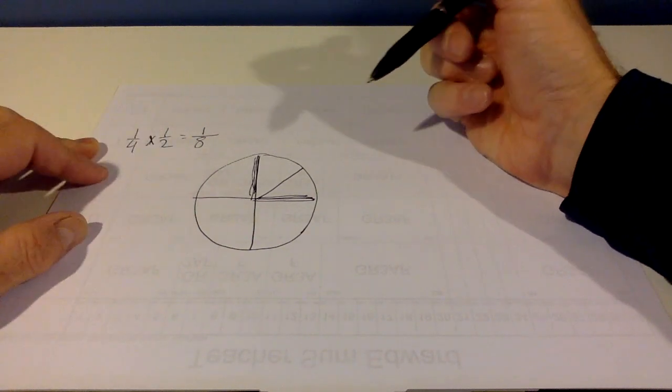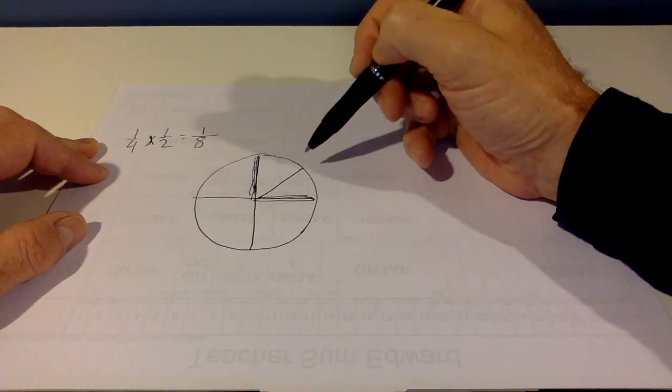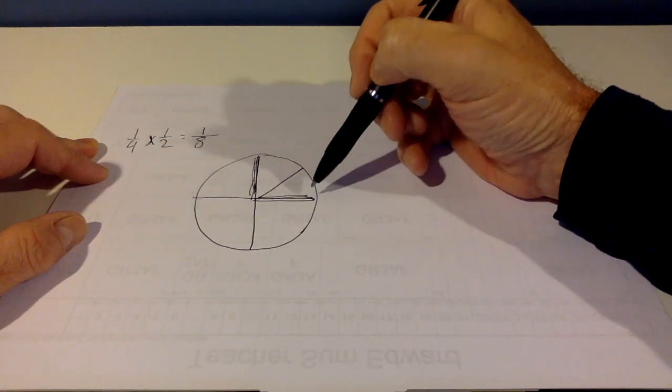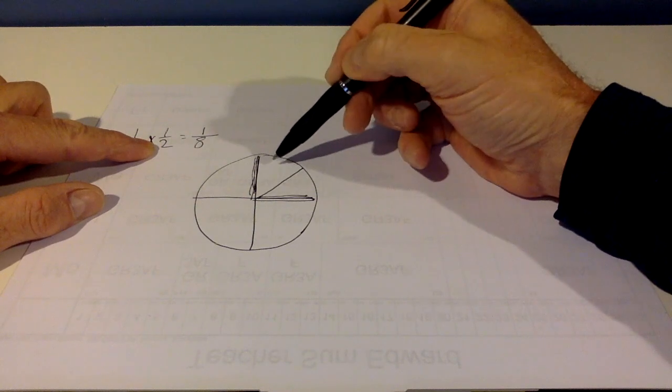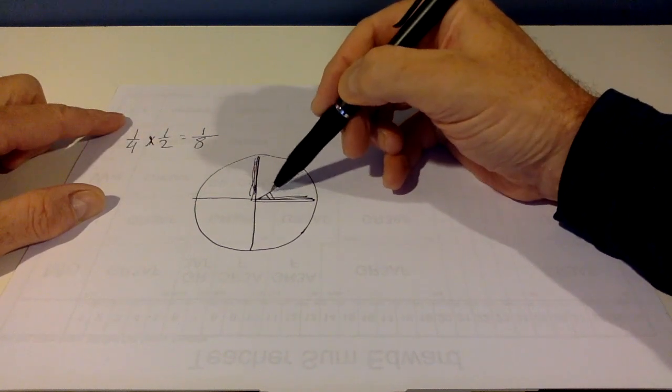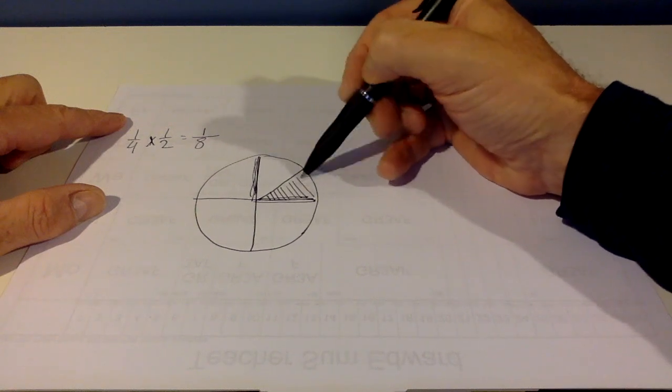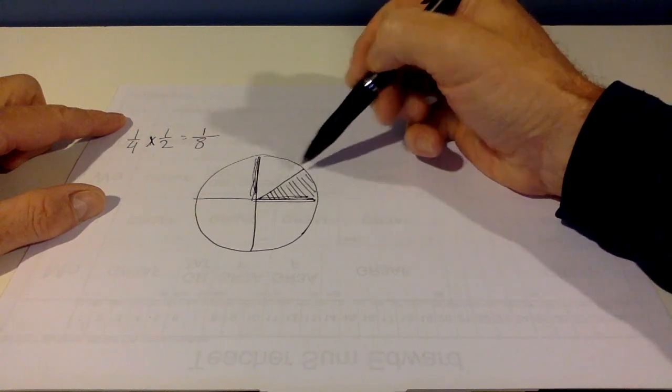Because the numerator is 1 of that 1/2. We took the 1/4, we cut it into 2 parts, 1, 2. And we're looking at 1 of them, leaving us with this.